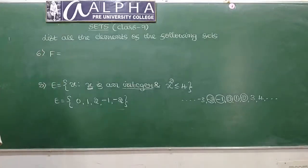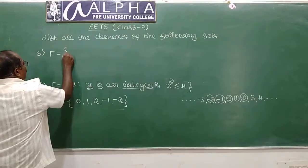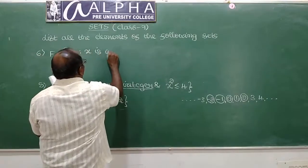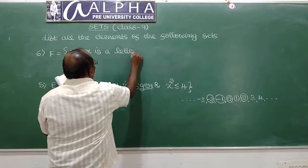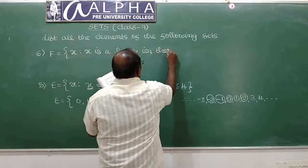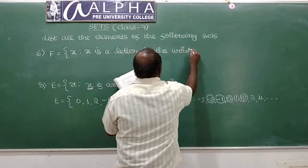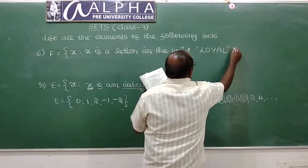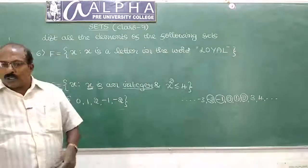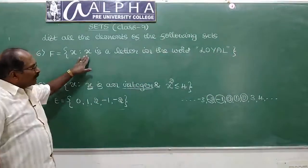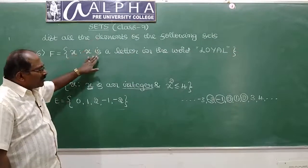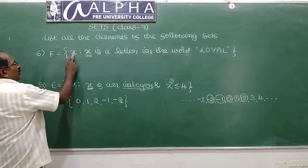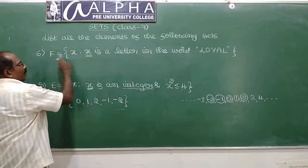Next problem: F is equal to the set of all x such that x is a letter in the word 'LOYAL'. We have to list all elements of this set — that is, express it in roster form.